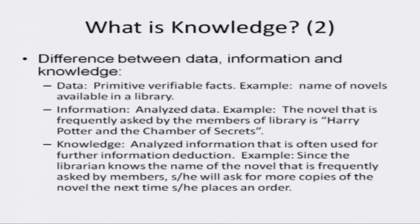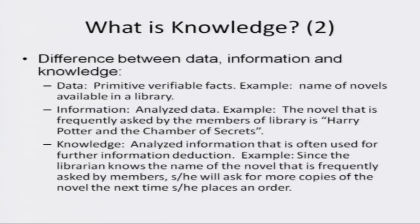The basic difference between data, information and knowledge: Data is primitive, verifiable fact — for example, the names of novels available in a library. Information is refined and analyzed data — for example, the novel most frequently requested by members of a library is Harry Potter and the Chamber of Secrets. Information adds value and sense to data, enabling one to answer questions in a particular context.